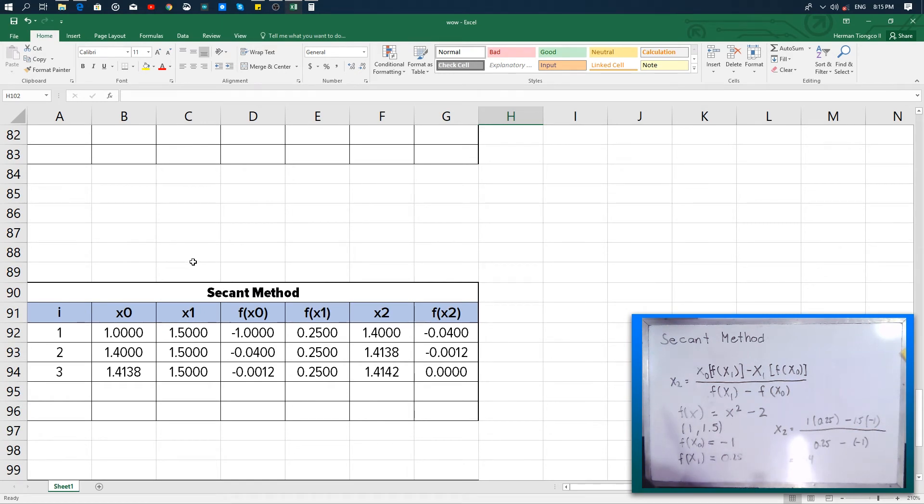So if we completed the table already, we have computed for the values, we will be arriving to our solution on the third iteration. And we will see the value of our root at the column x₂. So that is 1.4142 which is the value of square root of 2 up to 4 decimal places. And therefore, substituting this value onto our original equation, we will get 0.0000 which is accurate up to 4 decimal places also.